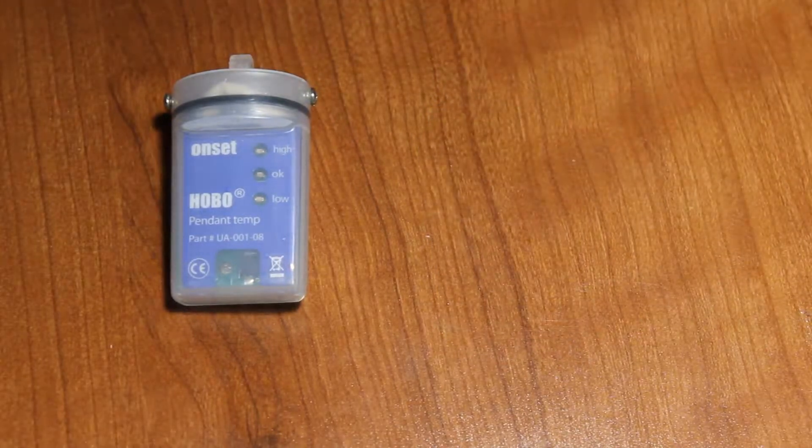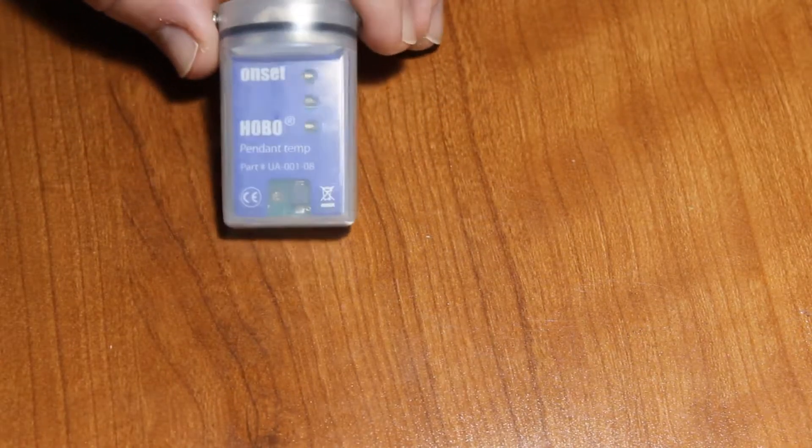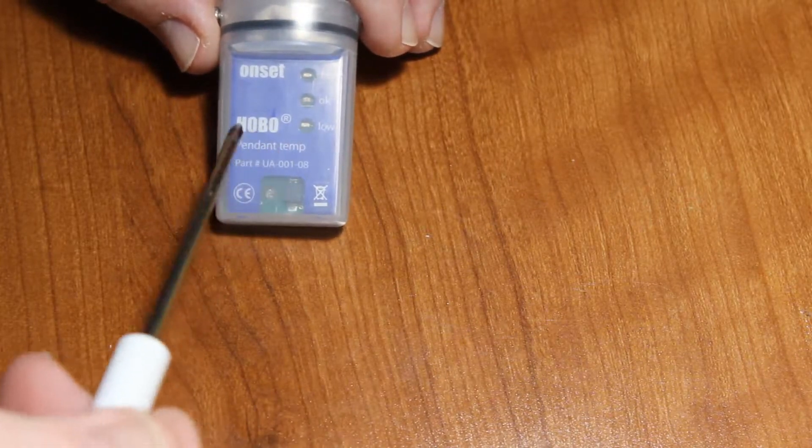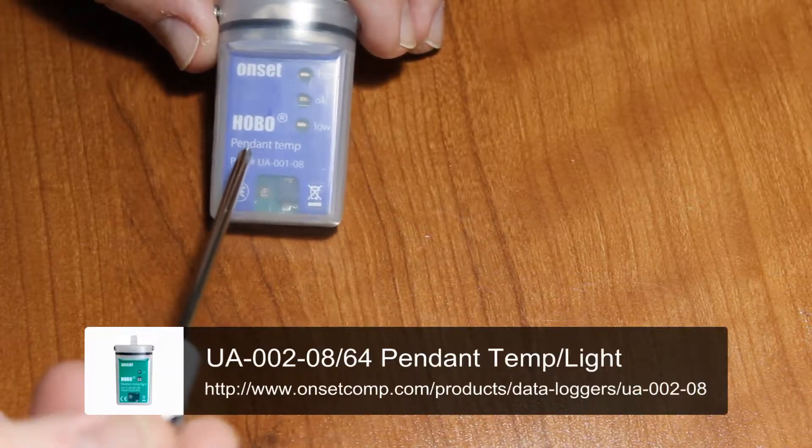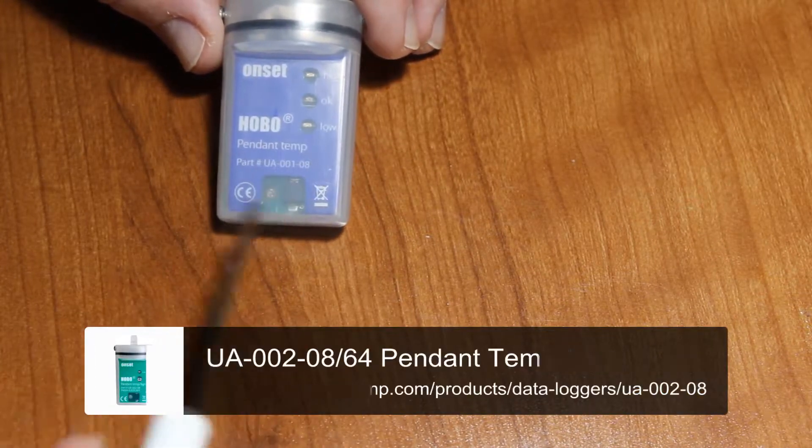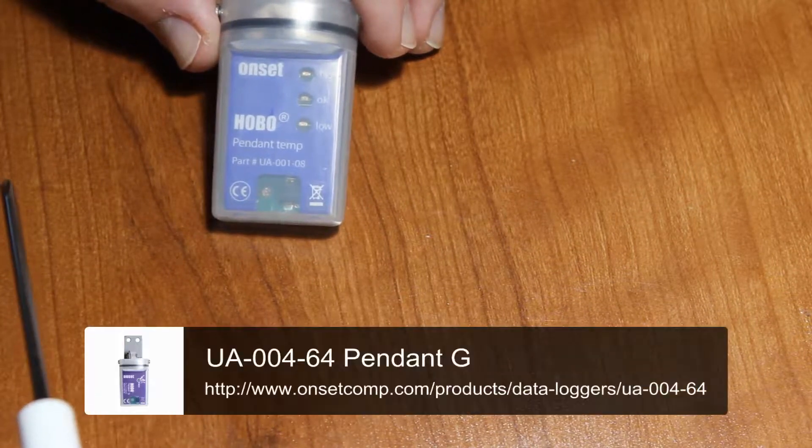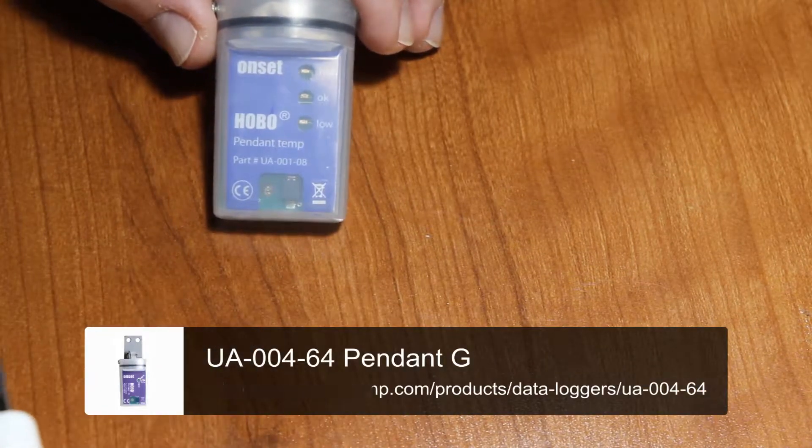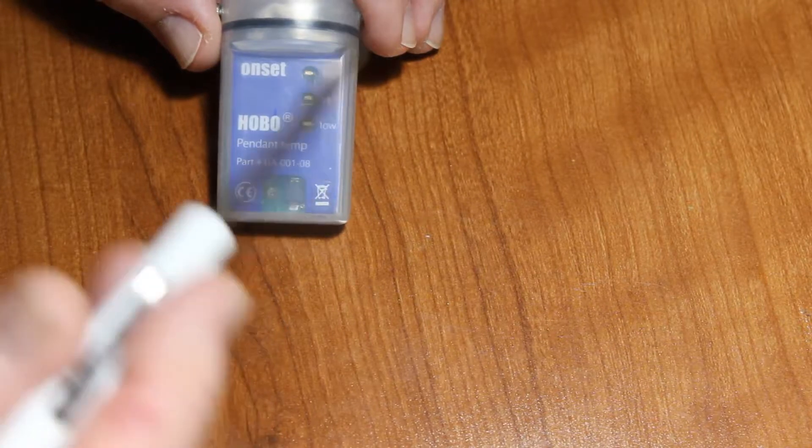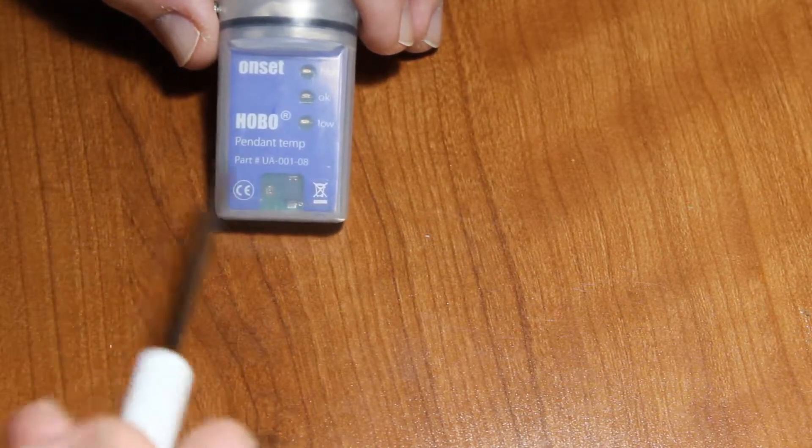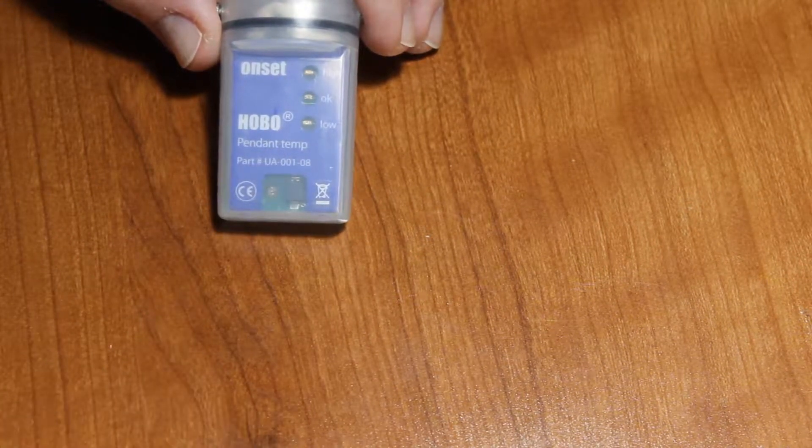Let's start with the temp logger. There's another model of this, there's actually two others. The pendant temp light, which has a green label, and the pendant G, which has a purple label. For example, the battery replacement would be similar in those as this temp-only.